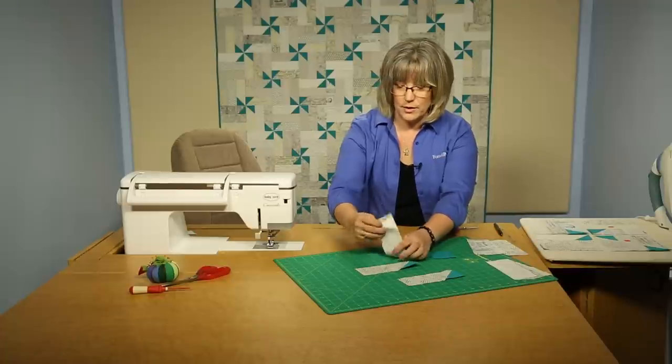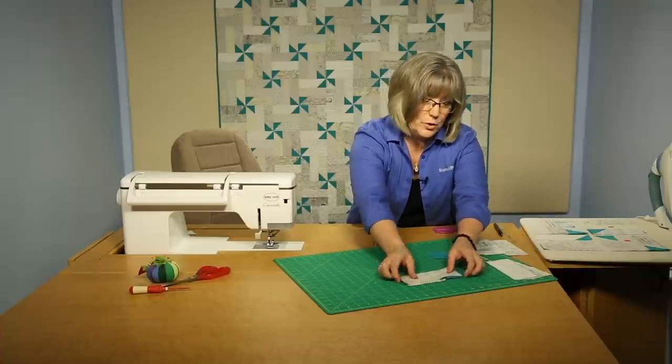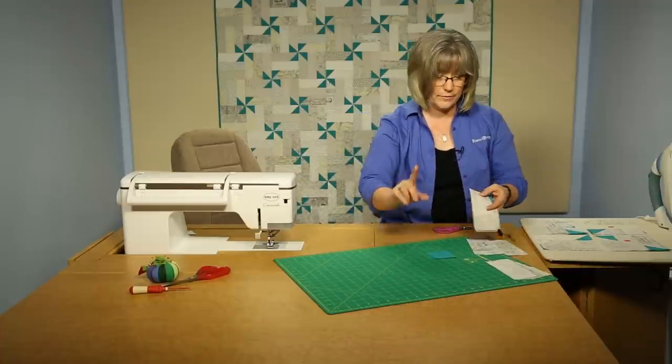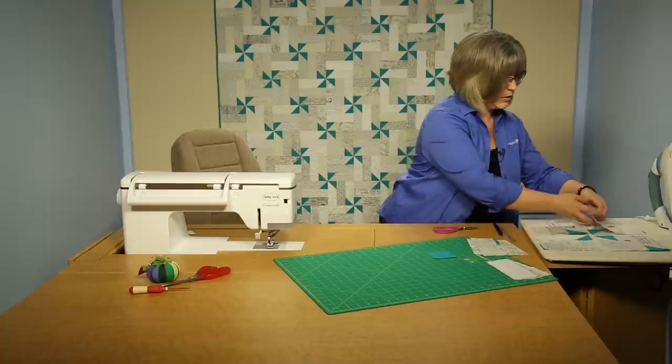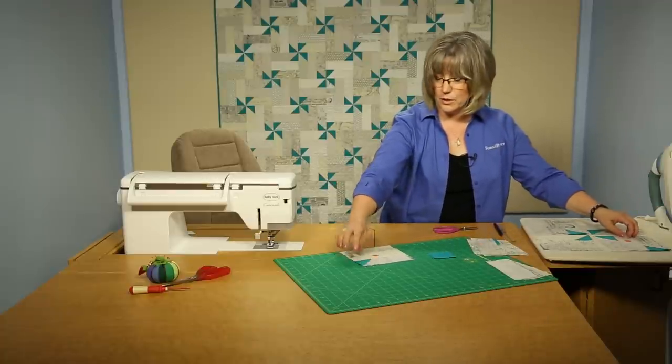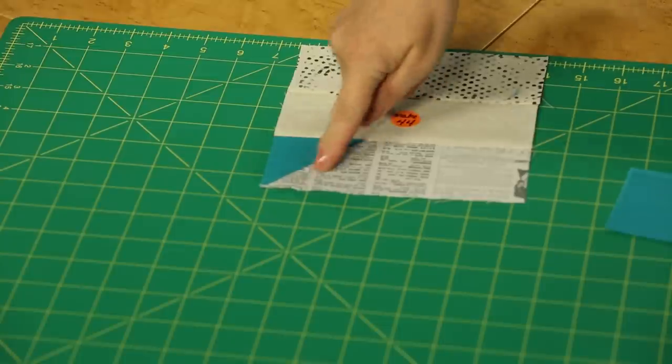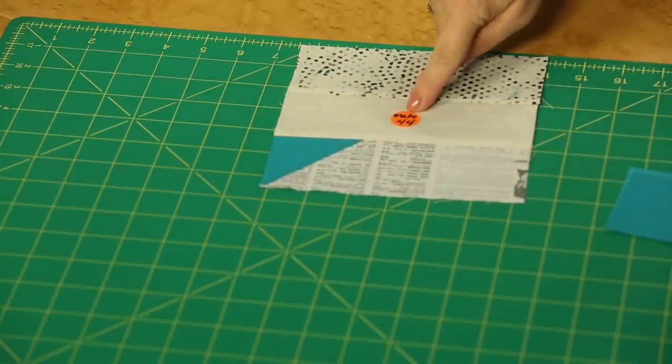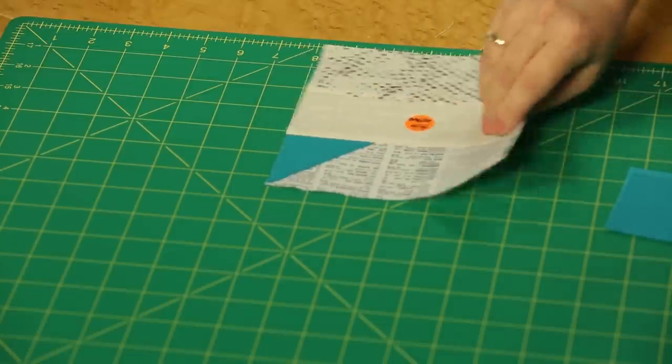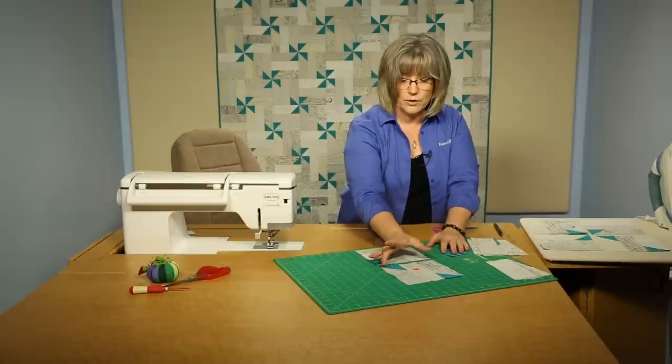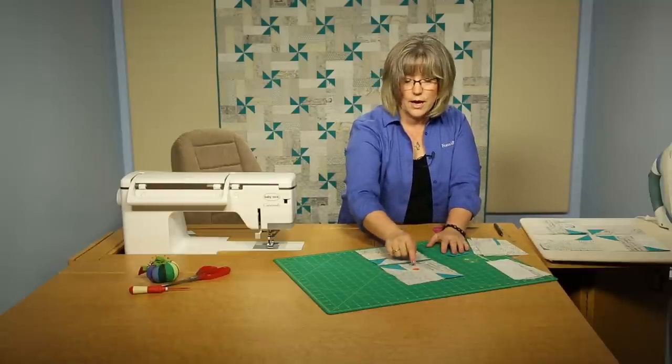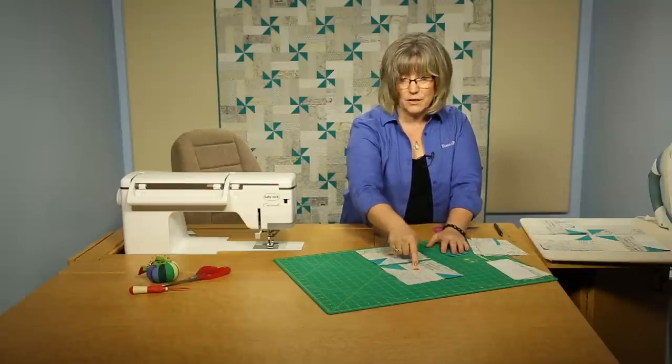Now within the quilt, you will find that that's one of the units you need to make, but there's actually a second. You're going to be making units like this with the one triangle within it, and you're going to make 44 of those. Then you're going to be making units that have triangles on two pieces, and you're going to make 96 of those.